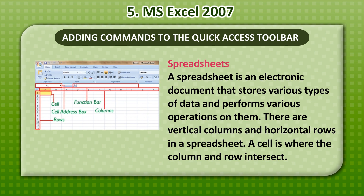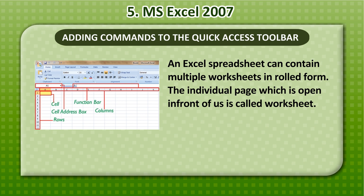Spreadsheets: A spreadsheet is an electronic document that stores various types of data and performs various operations on them. There are vertical columns and horizontal rows in a spreadsheet. A cell is where the column and row intersect. An Excel spreadsheet can contain multiple worksheets. The individual page which is open in front of us is called a Worksheet. Key elements include: Cell, Function Bar, Cell Address Box, Columns, and Rows.